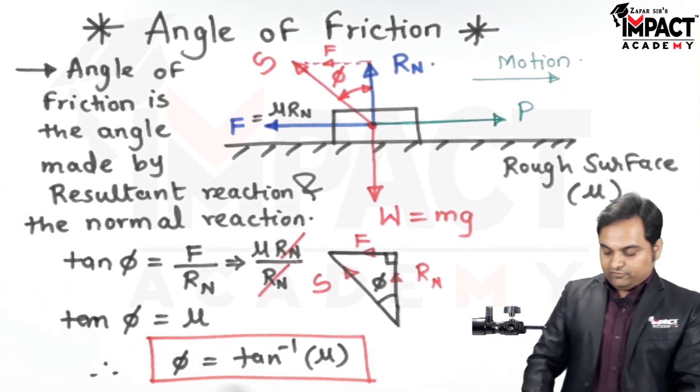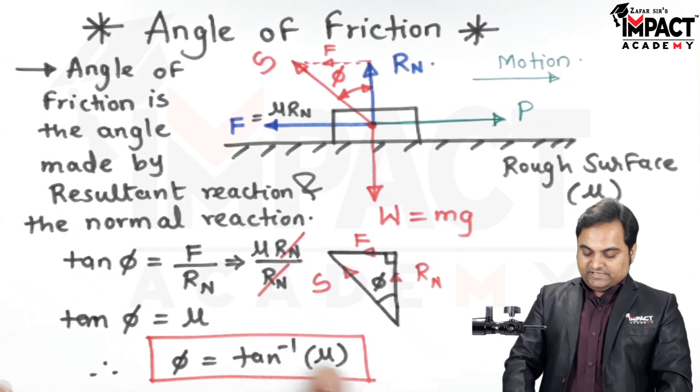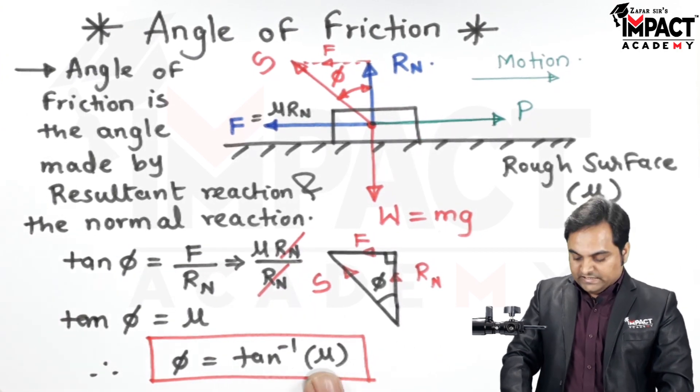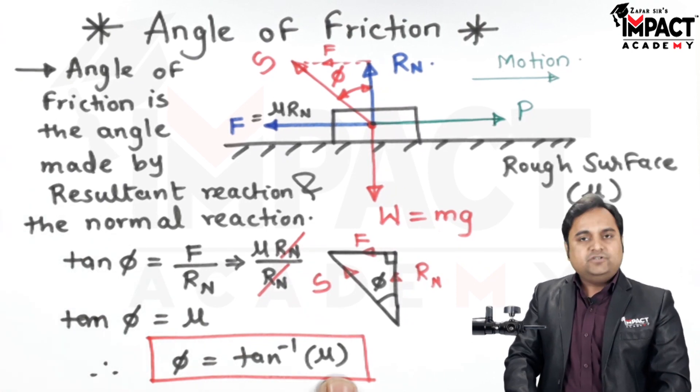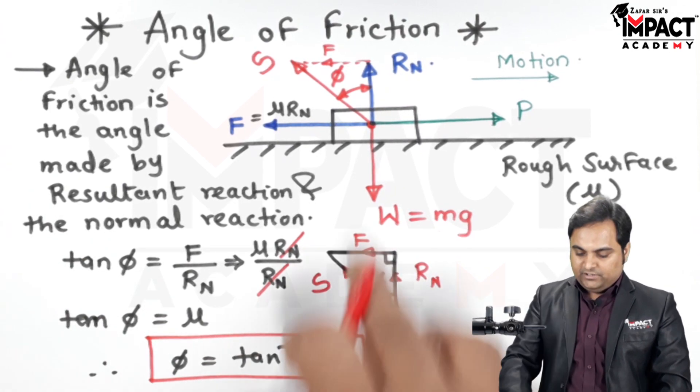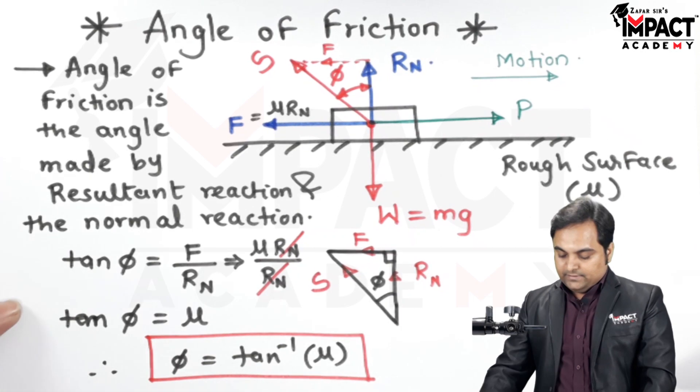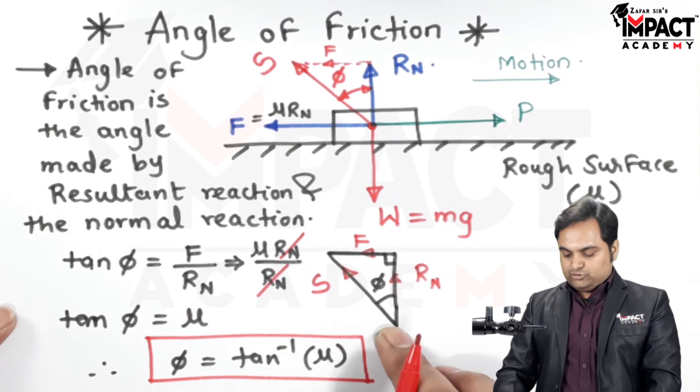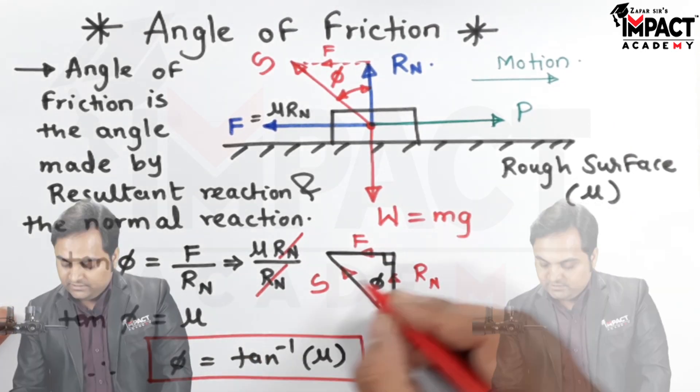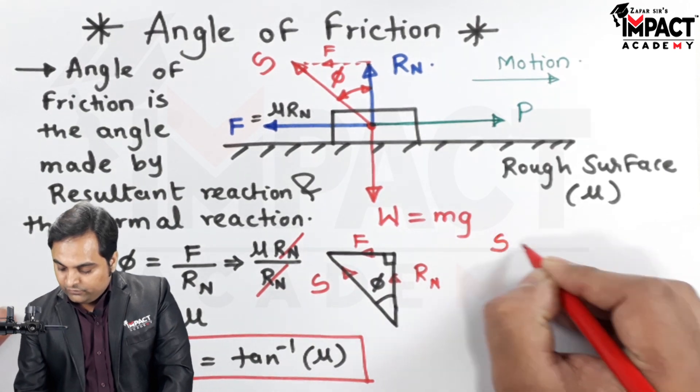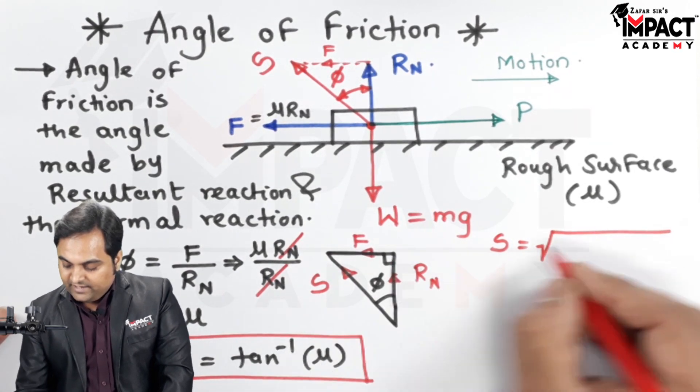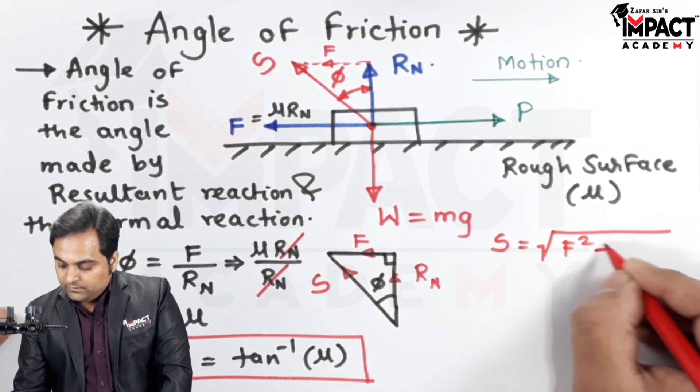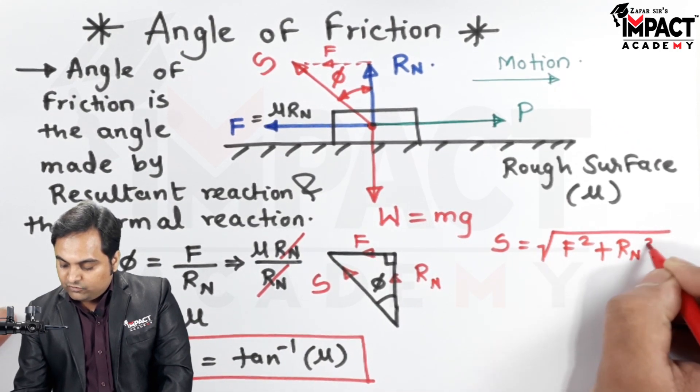So this is tan inverse of mu, that is the coefficient of friction, and it means phi depends only upon the coefficient of friction that is the friction angle. Next the resultant reaction can also be found from the same triangle since it is hypotenuse, so it would be S equal to root of F square plus Rn square.